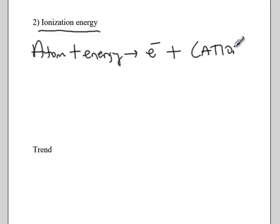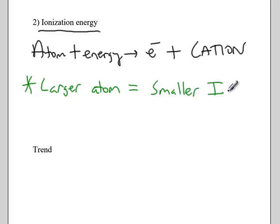the atom will turn into a cation. The key thing for ionization energy is the larger the atom, the electron that we're removing will be farther away from the nucleus, and that is easier to remove, and so a larger atom has a smaller ionization energy.